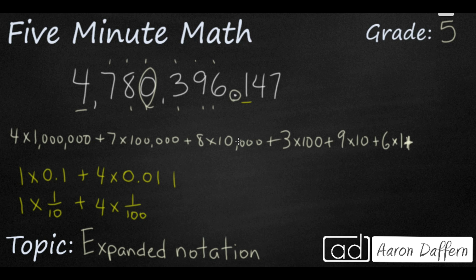And then, finally, we have a 7 here and that is in the thousandths place. So, you can either write a 7 times 0.001 or 7 times 1 over 1000. So, that is how you write a number in expanded notation all the way up through the thousandths place. Now, it's time for you to practice.